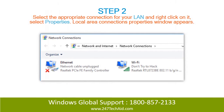Step 2. Select the appropriate connection for your LAN and right-click on it, then select Properties. The Local Area Connections Properties window appears.